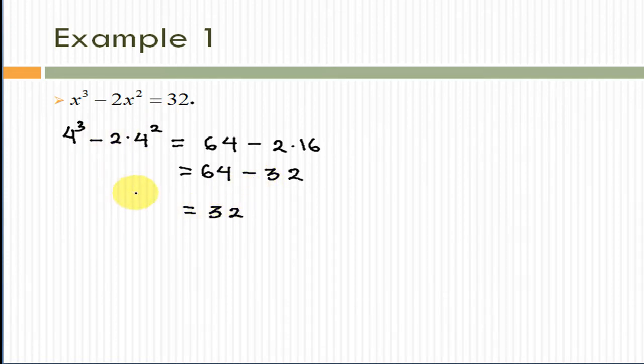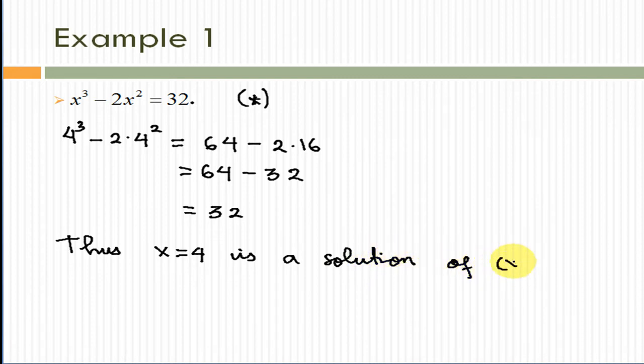As we can see from this computation, when we plug in x equals 4, we get 32. That means when we plug in x equals 4, this statement becomes a true statement. Therefore, we call x equals 4 a solution of this equation. Thus, x equals 4 is a solution of the star equation.